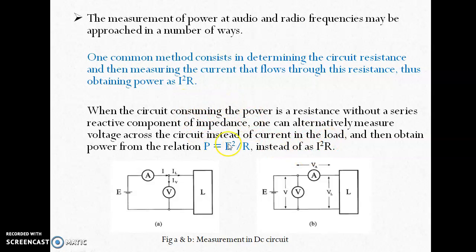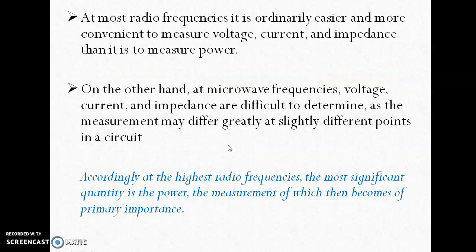These are the common methods we have been using for DC analysis and lower audio frequency ranges. But for higher frequency ranges, the situation becomes different. Audio frequency ranges from 20 Hz to 20 kHz, and beyond that we call it radio frequency. For lower radio frequency ranges, it is ordinarily easier to find current and impedance and calculate power.